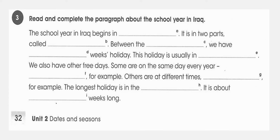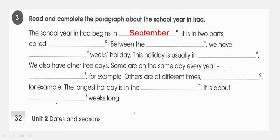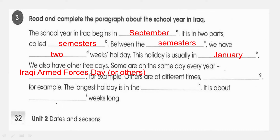Exercise Three: Read the incomplete paragraph about the school year in Iraq and complete it. The school year in Iraq begins in September. It is in two parts called semesters. Between the semesters we have two weeks holiday — this holiday is usually in January. We also have other free days: some are on the same day every year, like Iraqi Armed Forces Day. Others are at different times, for example Eid Al-Fitr. The longest holiday is in the summer — about twelve weeks long.